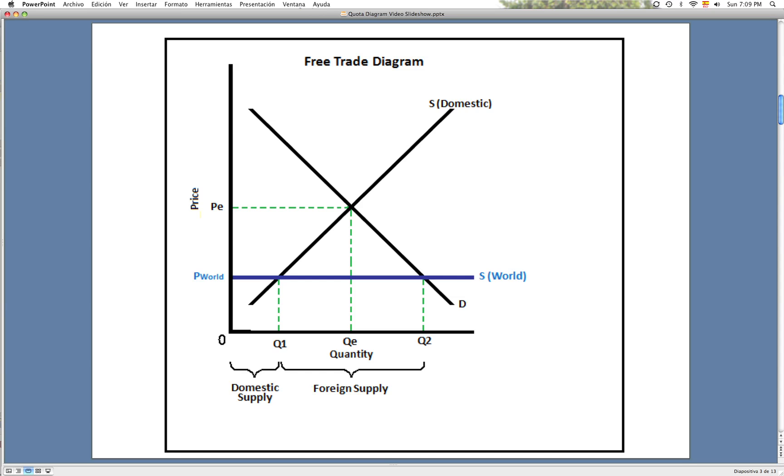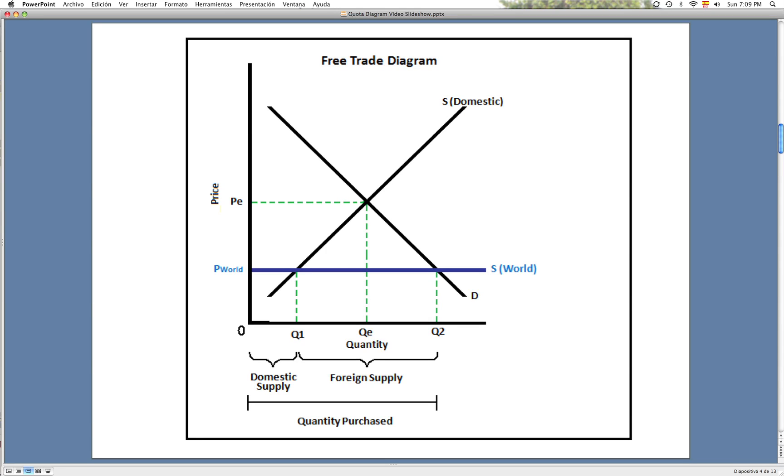The quantity purchased is from 0 to Q2, almost the whole quantity of the diagram.